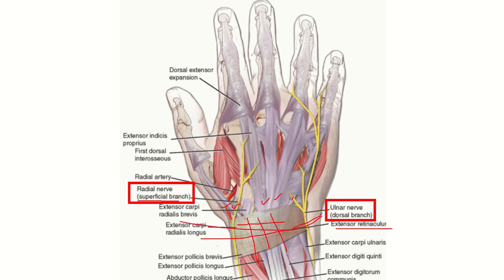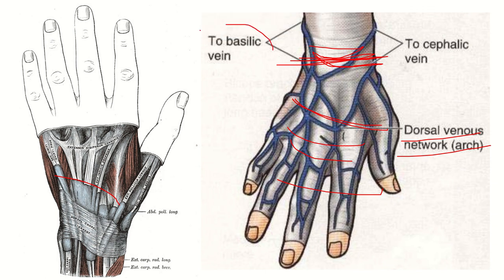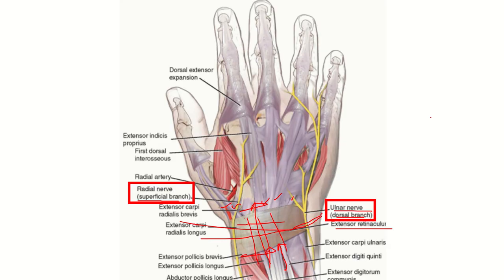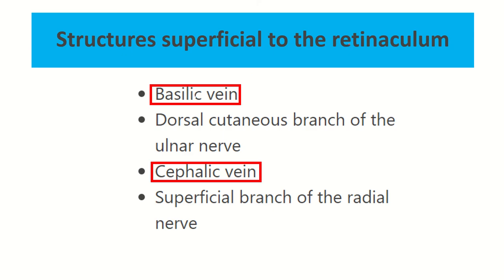The dorsal branch of the ulnar nerve and the superficial branch of the radial nerve both have risk of injury during this type of injury, as they run superficial to the extensor retinaculum. Structures and vessels that pass below the extensor retinaculum will be intact. The basilic vein and cephalic vein may be injured, and the superficial branch of the radial nerve and dorsal branch of the ulnar nerve also have risk of injury.